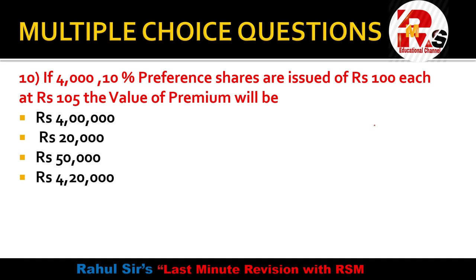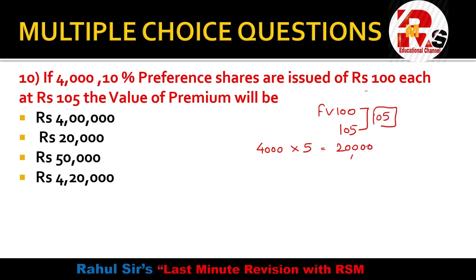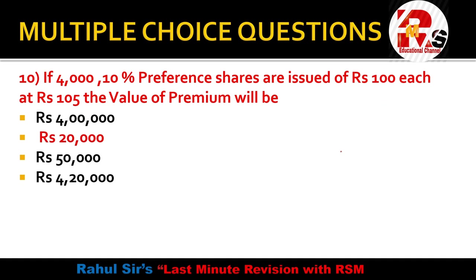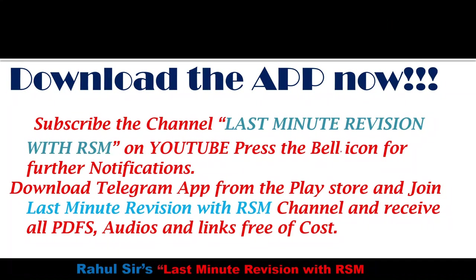Next: If 4,000 10% preference shares are issued of Rs.100 each at Rs.105, the value of the premium will be? Face value is Rs.100, issue value is Rs.105, so the difference (premium) is Rs.5 per share. Number of preference shares = 4,000. So 4,000 × Rs.5 = Rs.20,000. The right answer is Rs.20,000.